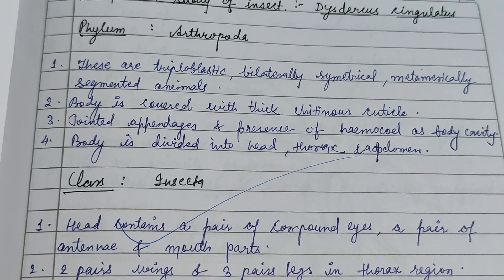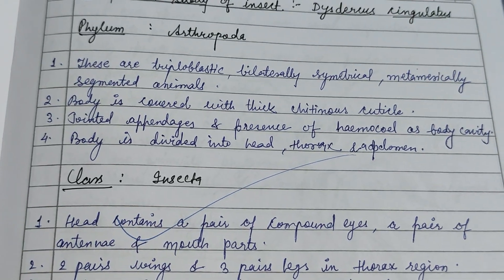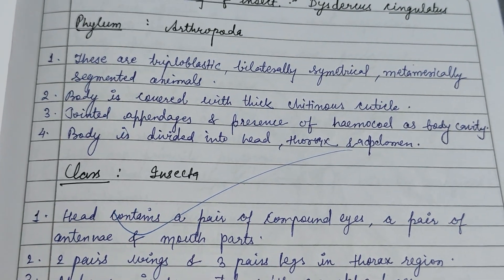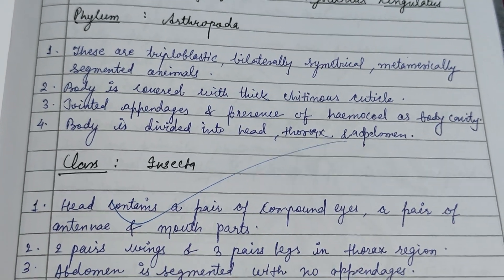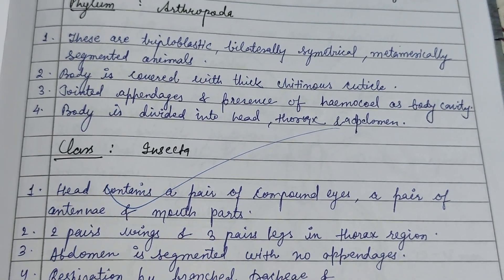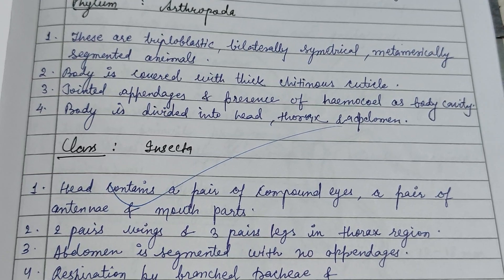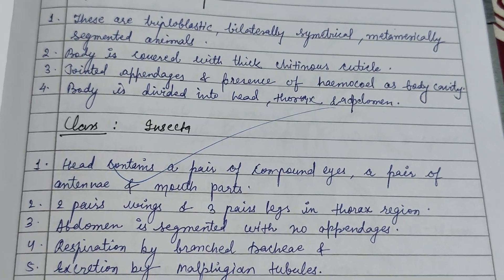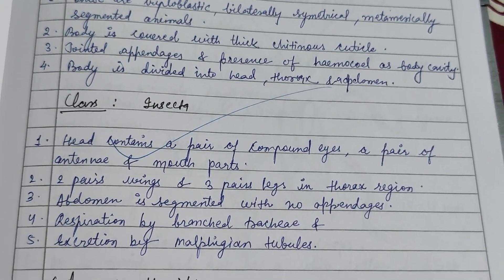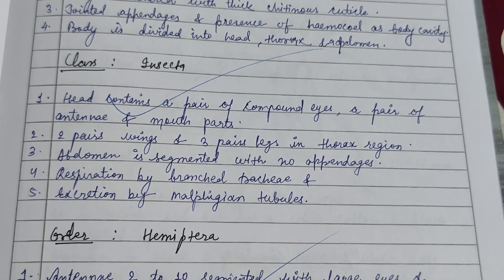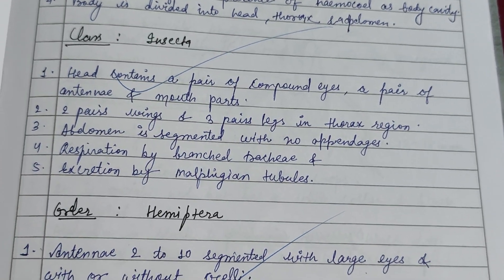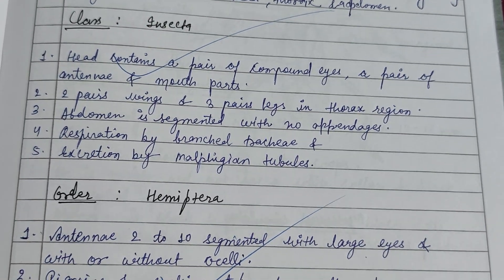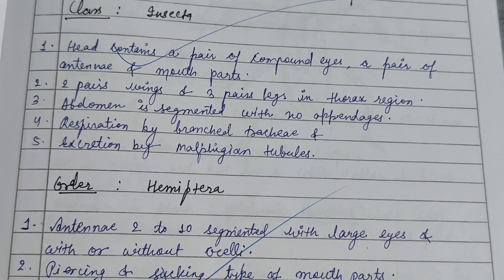The characters of the phylum Arthropoda are as follows: they are triploblastic with a segmented body covered with a thick chitinous cuticle. The class Insecta includes a pair of compound eyes, a pair of antennae, and mouthparts. The body is divided into head, thorax, and abdomen.